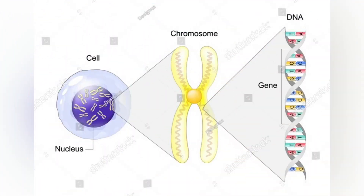Von Willebrand disease is the most common hereditary blood clotting disorder in humans. An acquired form can sometimes result from other medical conditions. It arises from a deficiency in the quality or quantity of von Willebrand factor, a multimeric protein that is required for platelet adhesion. It is known to affect several breeds of dogs as well as humans.